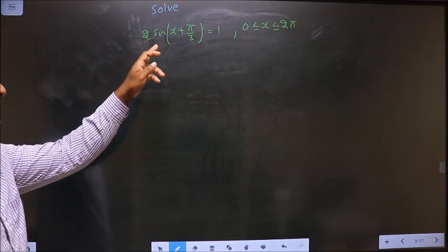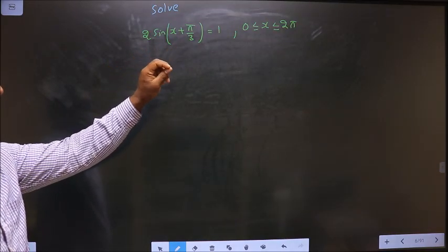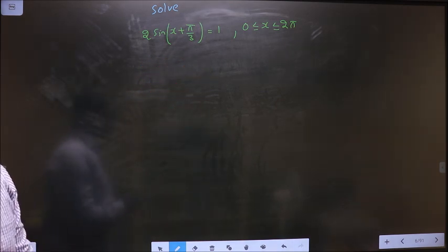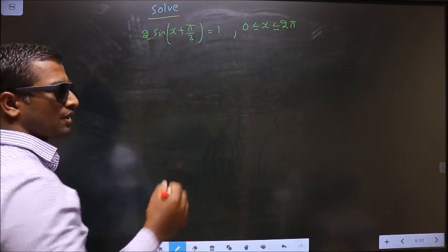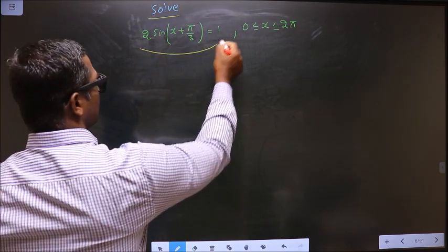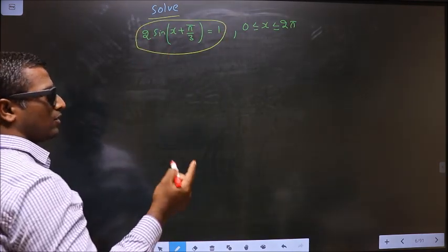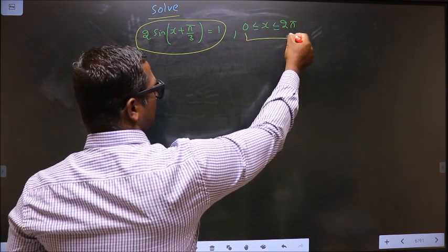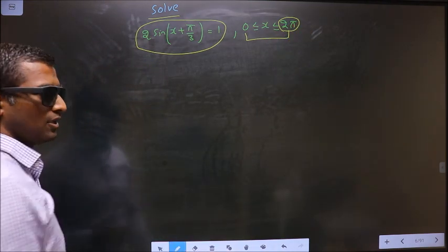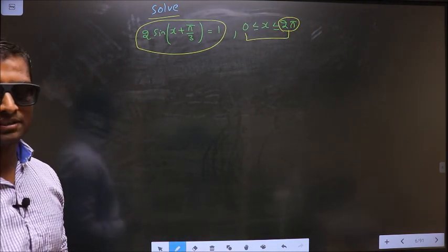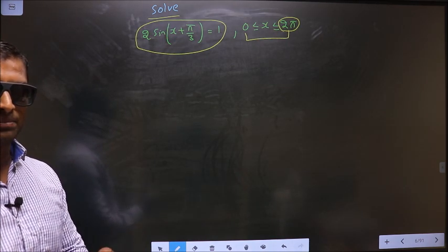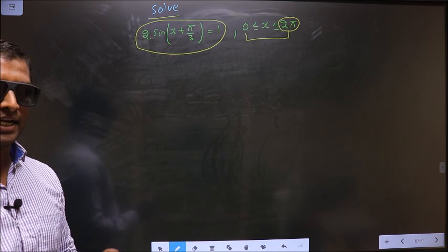Solve 2sin(x + π/3) = 1 where x lies in the interval 0 to 2π. Here they told you to solve, so you should find the values for x satisfying this equation and also it should lie in the interval 0 to 2π. Here you have 2π, that means you should get the answer in radians. For that, put your calculator in radians mode.